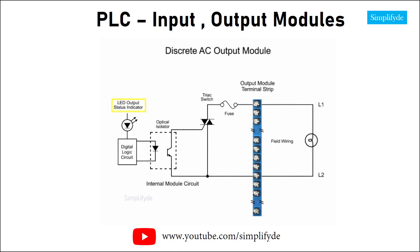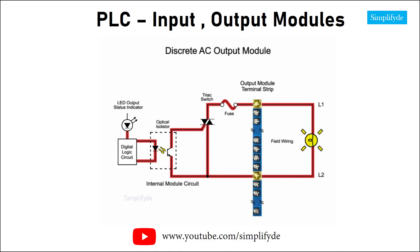When the output status is commanded from the PLC program, voltage is transmitted to the LED of the optical isolator. As light is received at the photo transistor, a triggered pulse at the gate of the triac allows current to pass to the output terminal and changes the state of the output device.